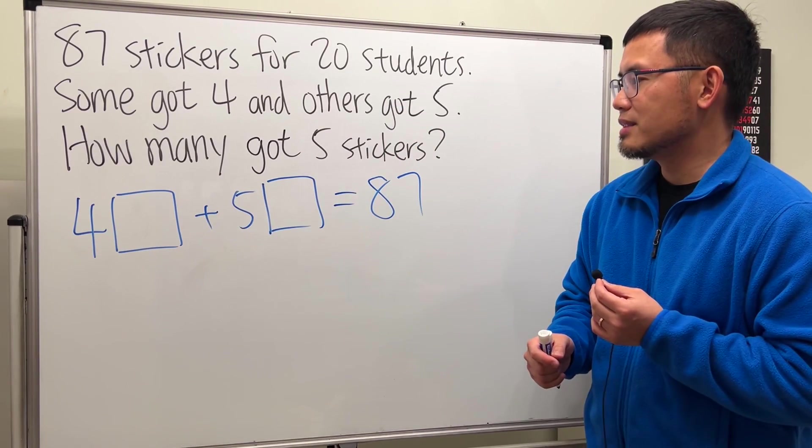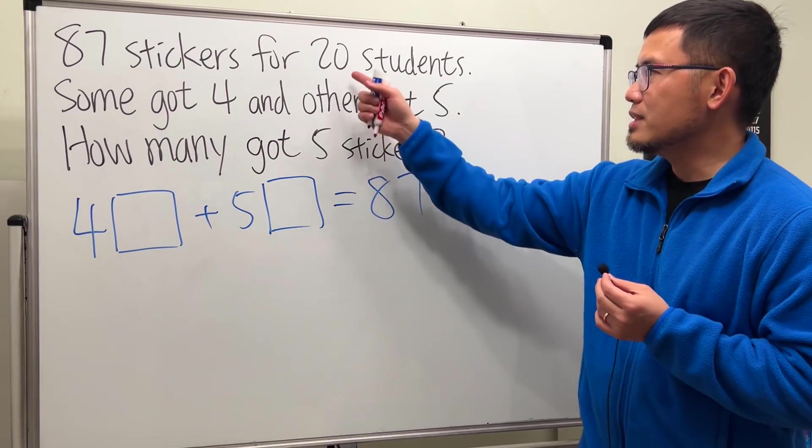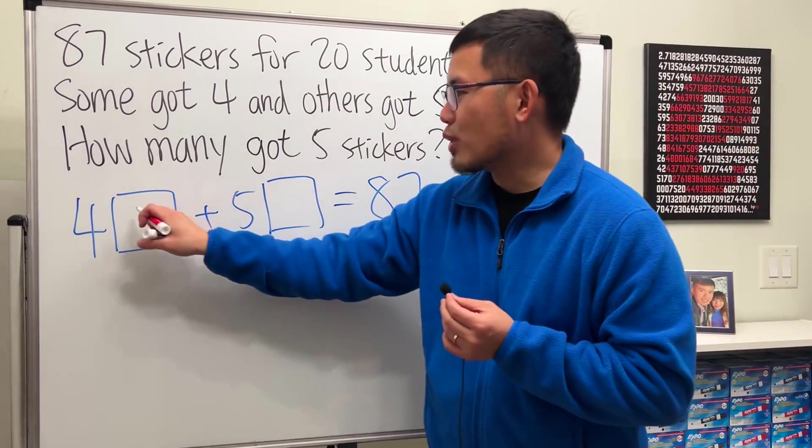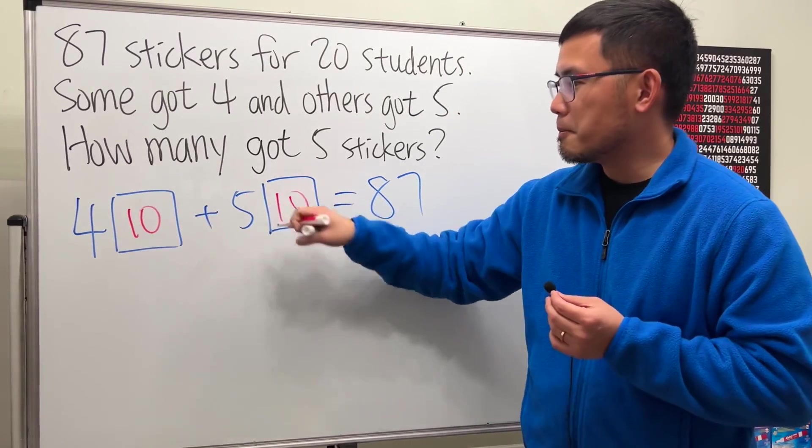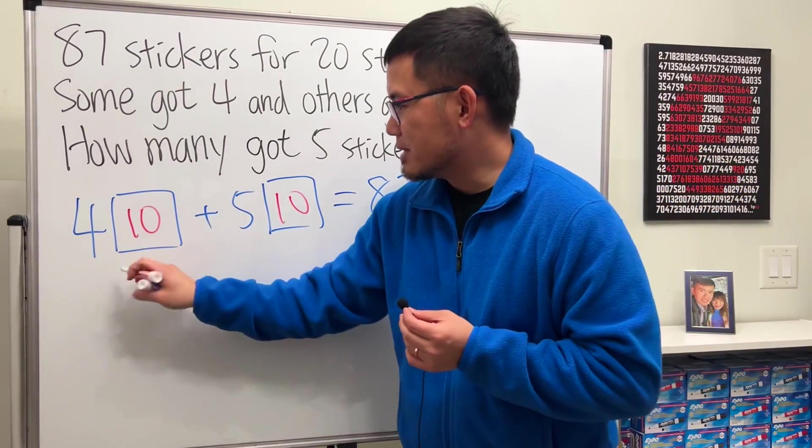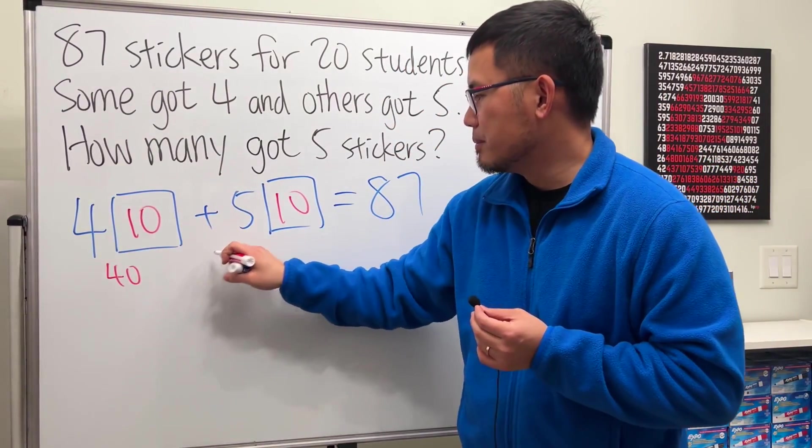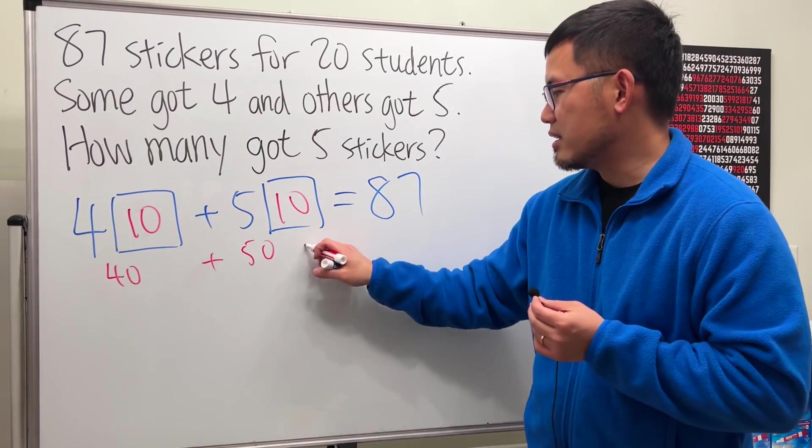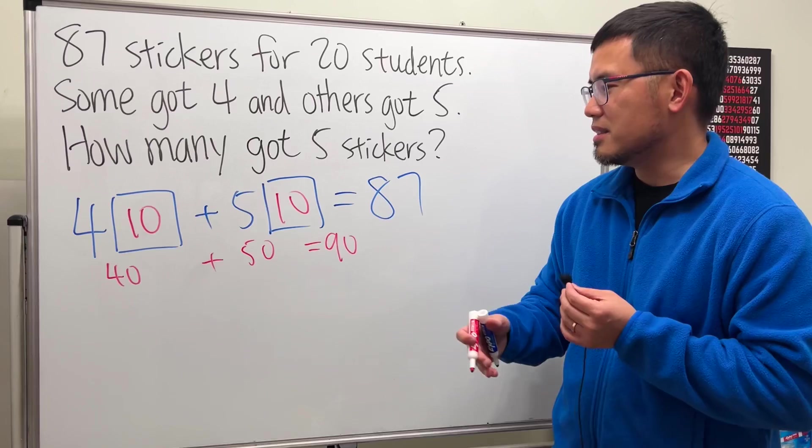So this is what we have to achieve: what to put here, what to put here, and also this plus that has to be equal to 20. Okay, so let's go ahead and think about it. Firstly, we have 20 students, so let's just cut this into half. Let's try 10 and 10. Four times 10 is 40, and then five times 10 is 50. And if you add them, you get 90.